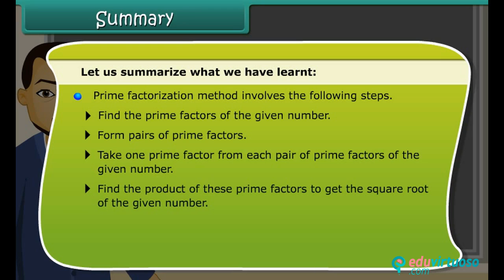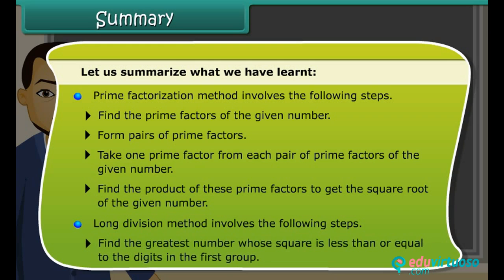Long division method involves the following steps: find the greatest number whose square is less than or equal to the digits in the first group.